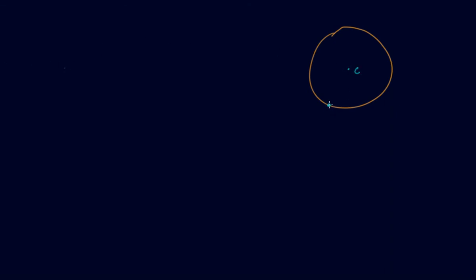Now, this is a circle with center C. The curved part P and Q is known as the arc. PQ is the arc. Whereas if I join P and Q with a line segment, then that PQ line segment becomes the chord.